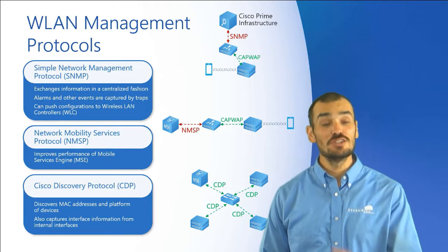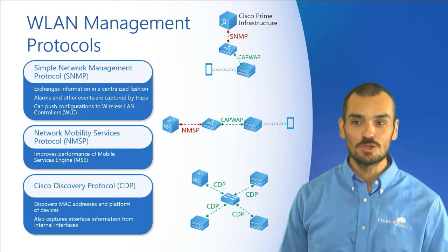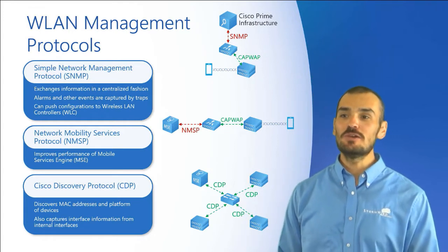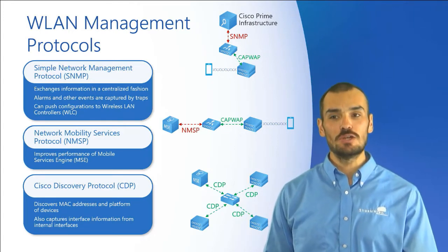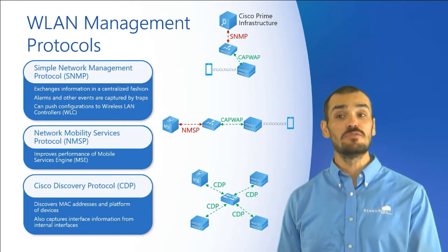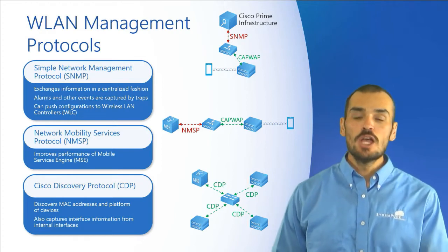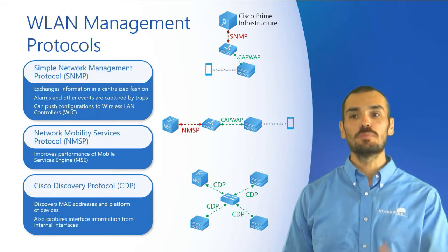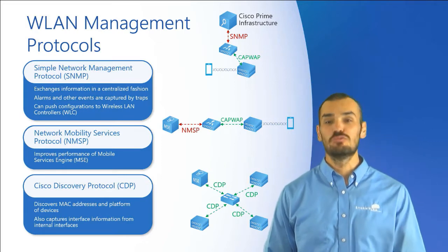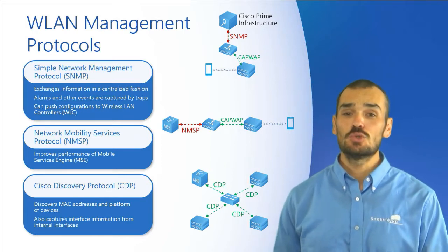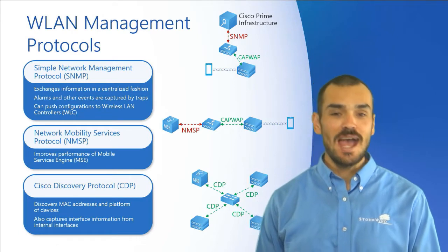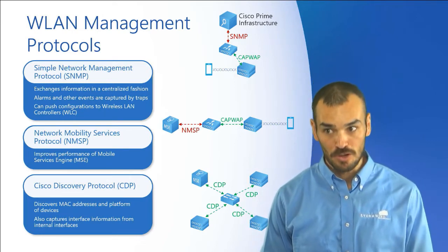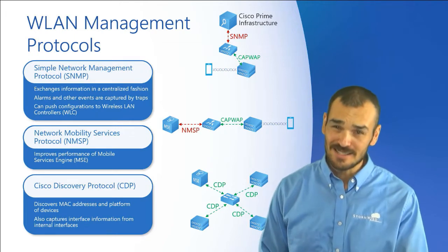The WLCs, or wireless LAN controllers, can then push those configurations down to the access points via a separate protocol. Communication between the controllers and the access points is provided via a mouthful of an acronym — the Control and Provisioning of Wireless Access Points, otherwise known as the CAPwAP protocol. We're going to discuss that later.